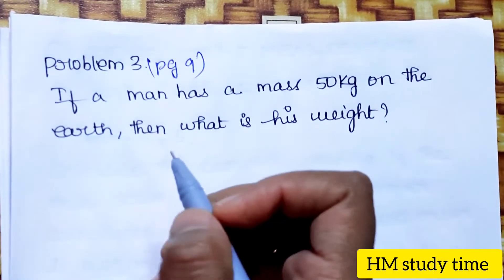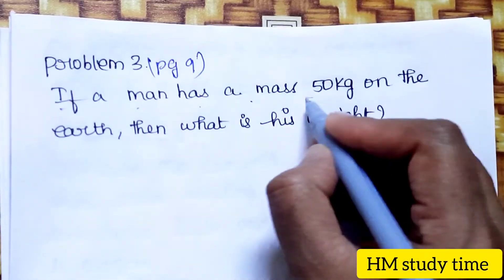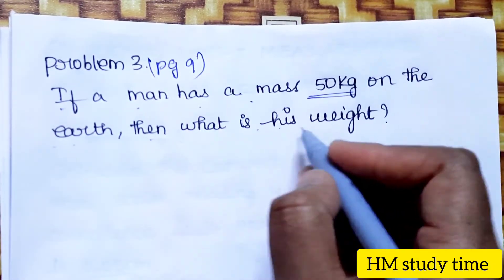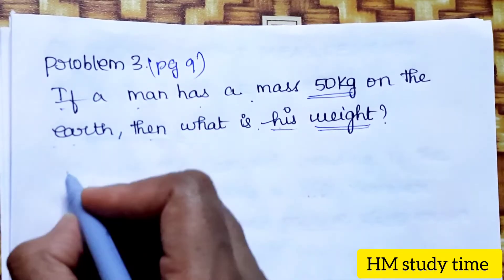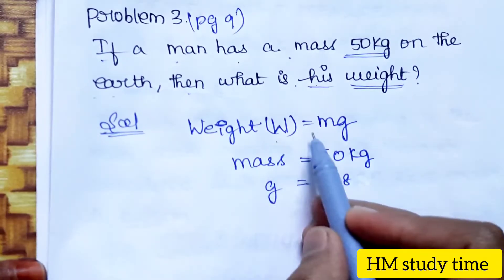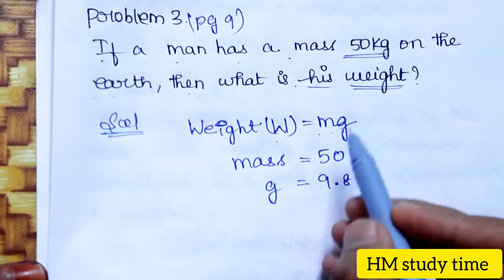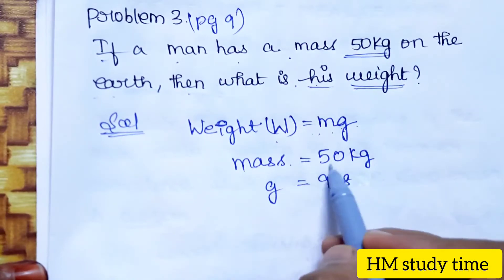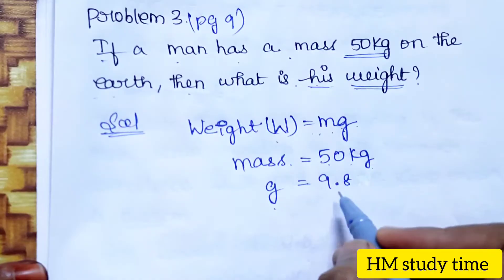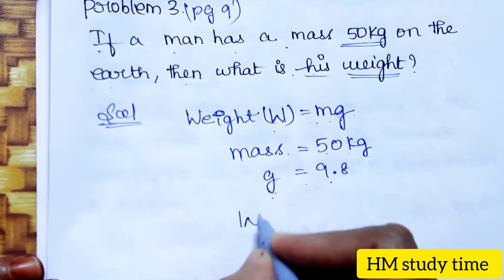Third problem, page number 9: if a man has a mass of 50 kg on Earth, then what is his weight? Weight equals mass into acceleration due to gravity. Mass is 50 kg and acceleration due to gravity g equals 9.8 m/s².